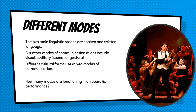There are non-linguistic modes of communication and these can include visual, auditory or gestural modes of communication. Different text forms, different cultural forms, different genres, use these modes in mixed ways. If we look at the example of the opera, here's an example of a text or a cultural form that's operating through multiple modes of communication.